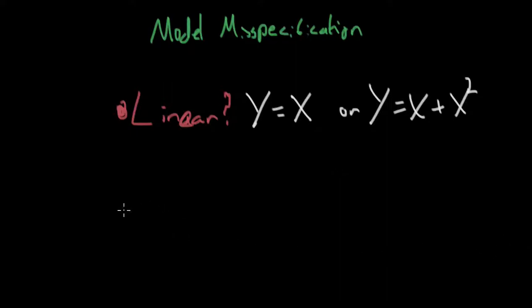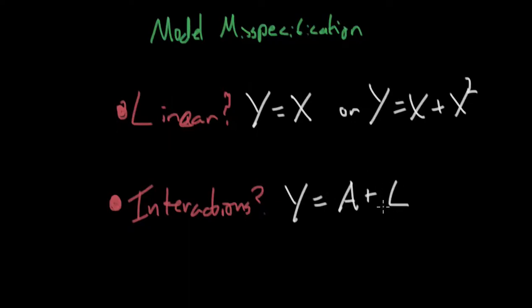The second thing that could be wrong with our model misspecification is are there interaction terms? So in our example above, we assumed it was a linear model, generated in some linear way. And we also assumed that the terms didn't necessarily interact. So that Y equals our treatment plus our confounder in some linear way.